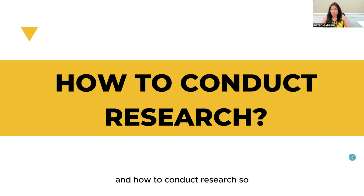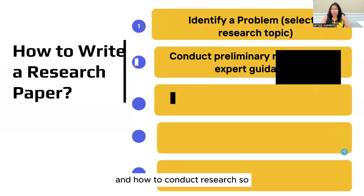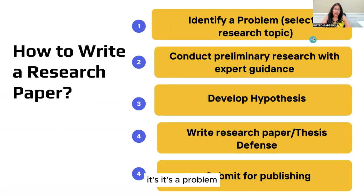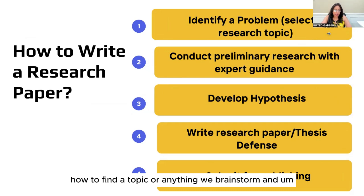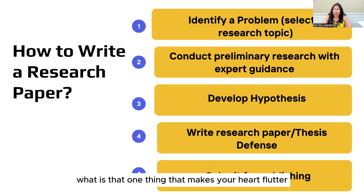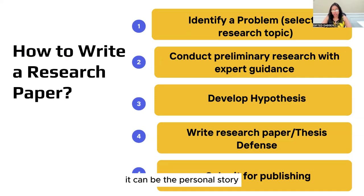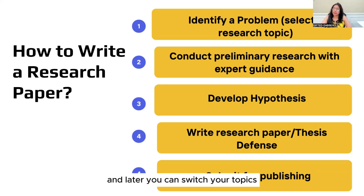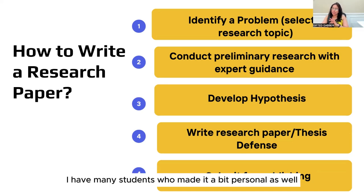How to conduct research and identify a problem - when somebody asks me how to find a topic, we brainstorm and we ask the student: what is that one thing that makes your heart flutter? It can be their personal story or any topic they are interested in. If they're not very clear about the topic, we tell them to zero in on the field, and later they can switch topics.